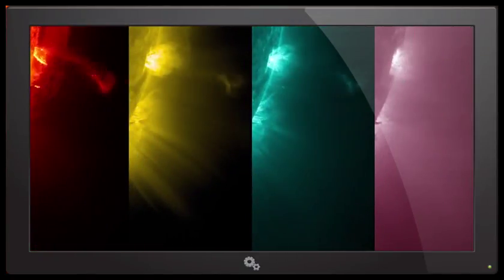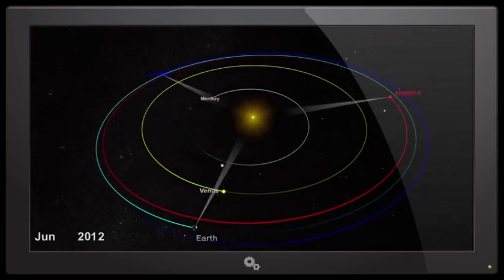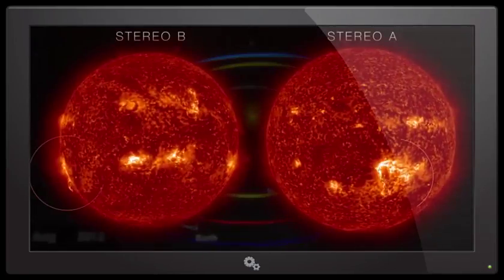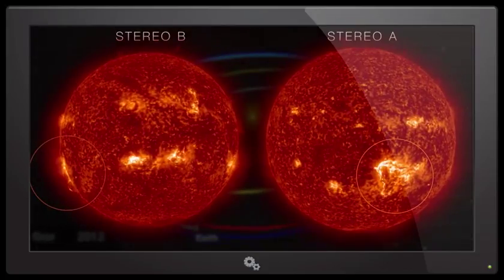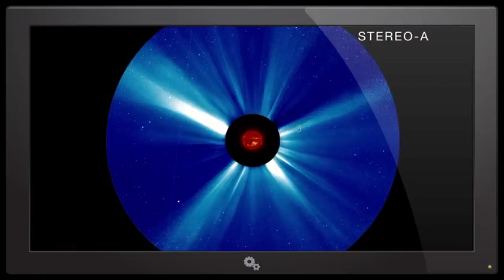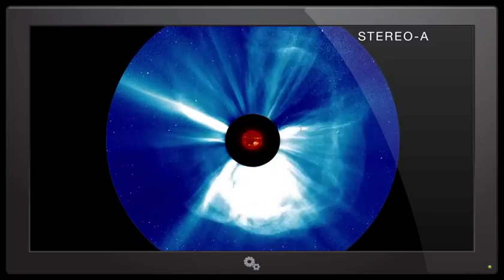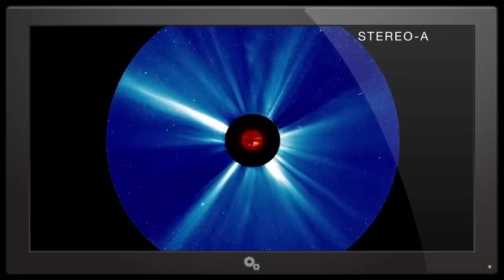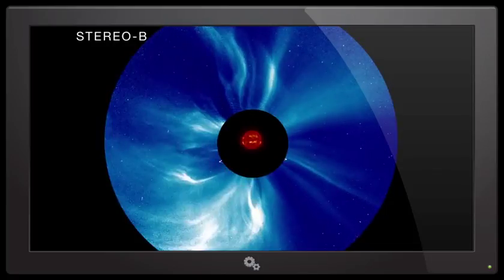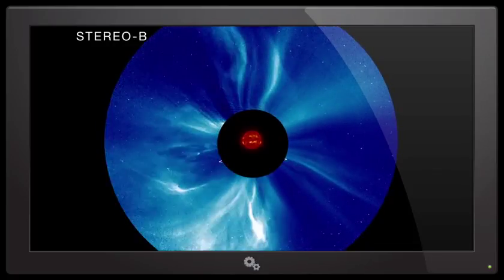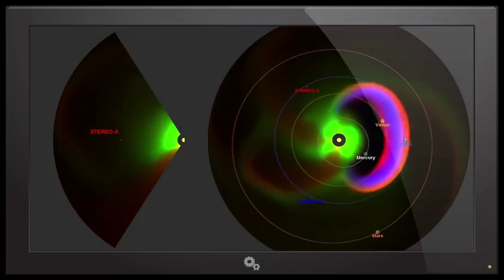NASA's twin stereo spacecraft, orbiting the sun ahead and behind Earth, gave a similar view from alternate perspectives. The stereo satellites also carry coronagraphs, which block the bright solar disk to make the fainter extended solar atmosphere, or corona, visible. As a result, they were able to image the actual CME as it left the sun. The CME headed in the direction of the Stereo A spacecraft at an astonishing 6.7 million miles an hour. All of these data allow computer models to reconstruct the full shape and expansion of the CME.